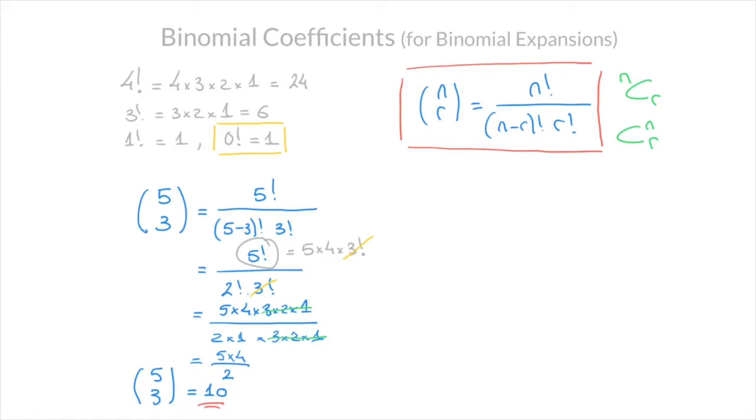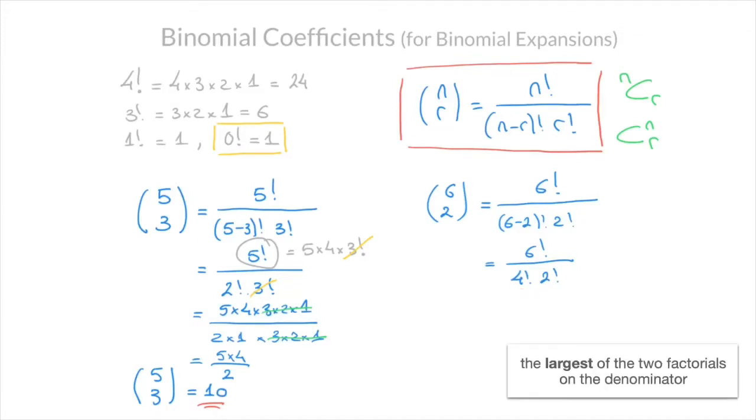Say we need to calculate the binomial coefficient (6,2). Well again, using the formula, we can state that this equals factorial 6 over factorial (6 minus 2) times factorial 2. In turn, that's equal to factorial 6 over factorial 4 times factorial 2. Looking at the denominator, we see that we have a factorial 4, so keeping that in mind...